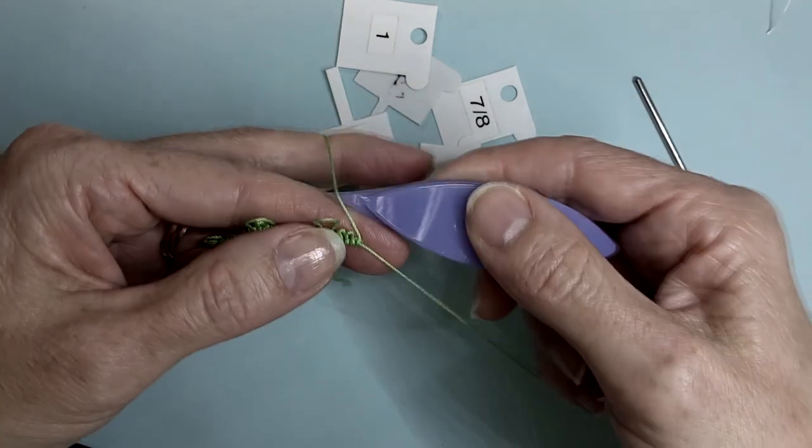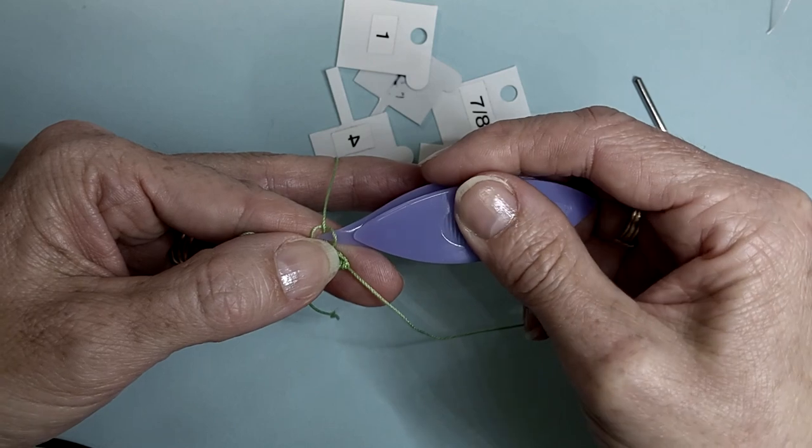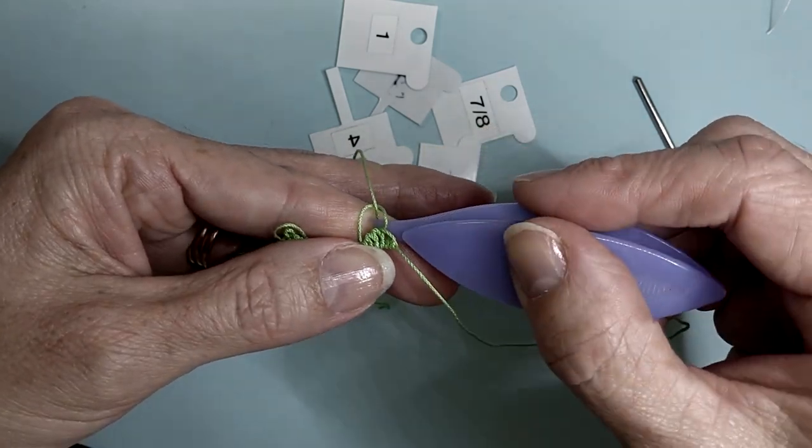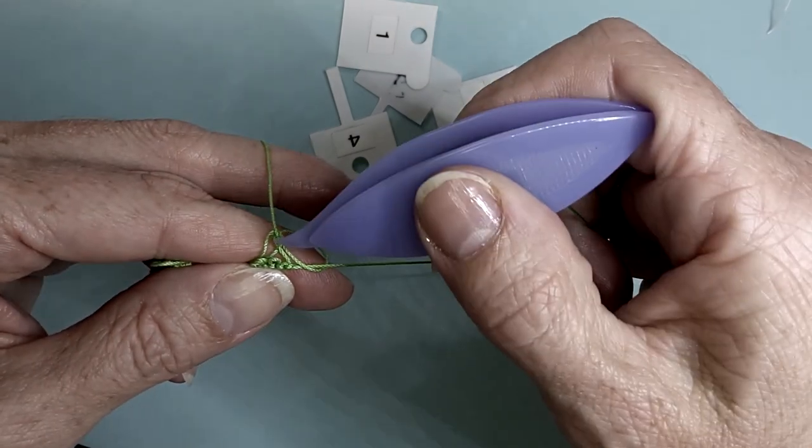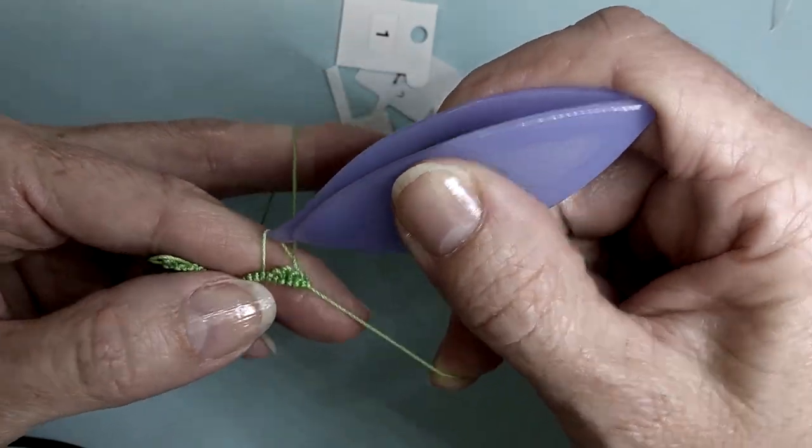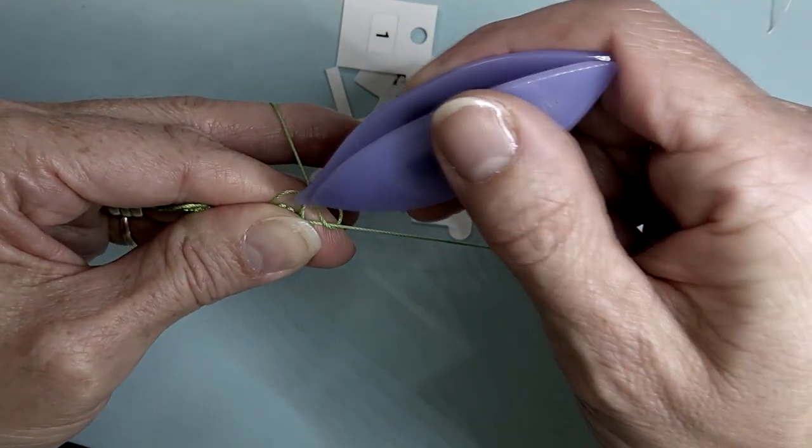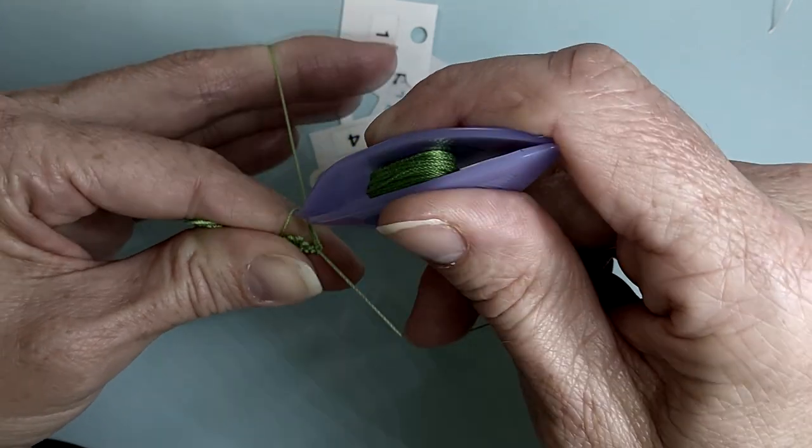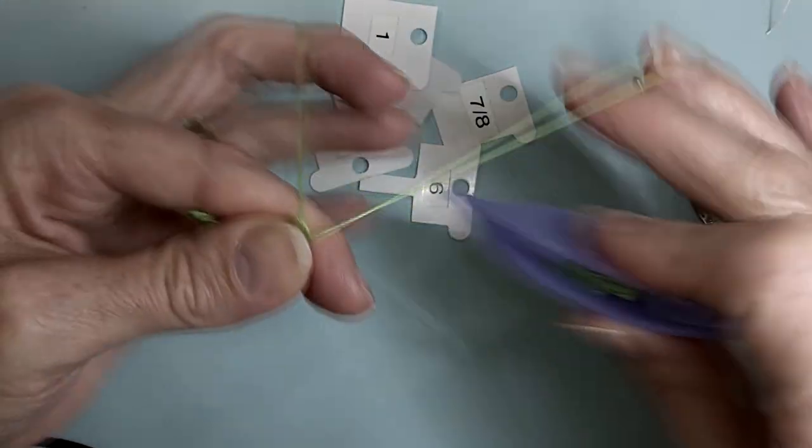Join to the long picot again, secure it with the second half of the double stitch, and finish out our ring with a count of ten.